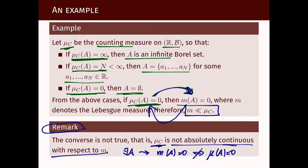Take A to be any non-empty set with Lebesgue measure zero, like any single point. For example, A = {1}. This set has m(A) = 0, but μ_C(A) = 1, not zero. So the converse is false in general.